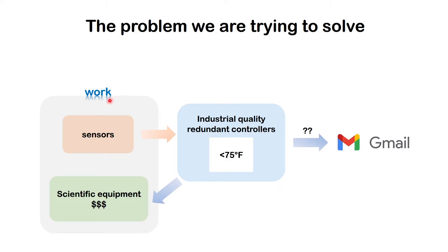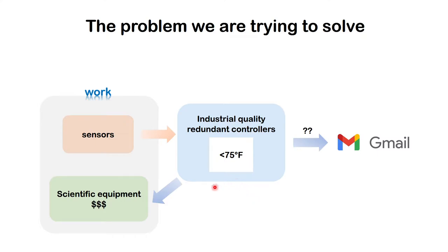In today's video I'm going to solve a problem at work — slightly linked to my previous video. At work we have a bunch of sensors that give temperature data to some industrial quality redundant controllers that keep the room temperature below 75 degrees Fahrenheit.